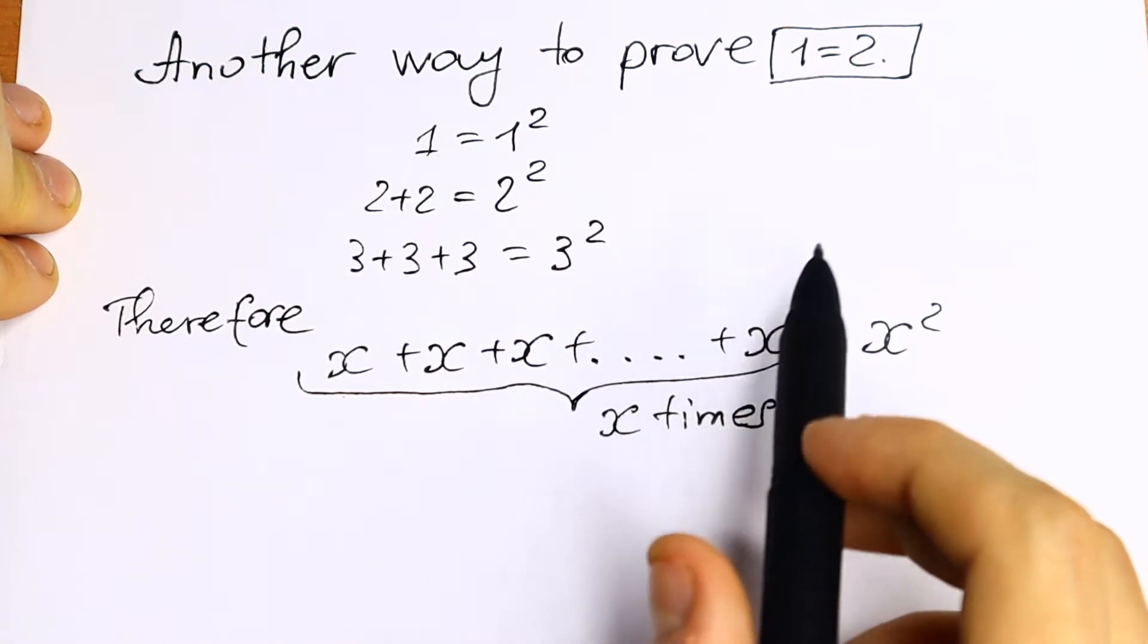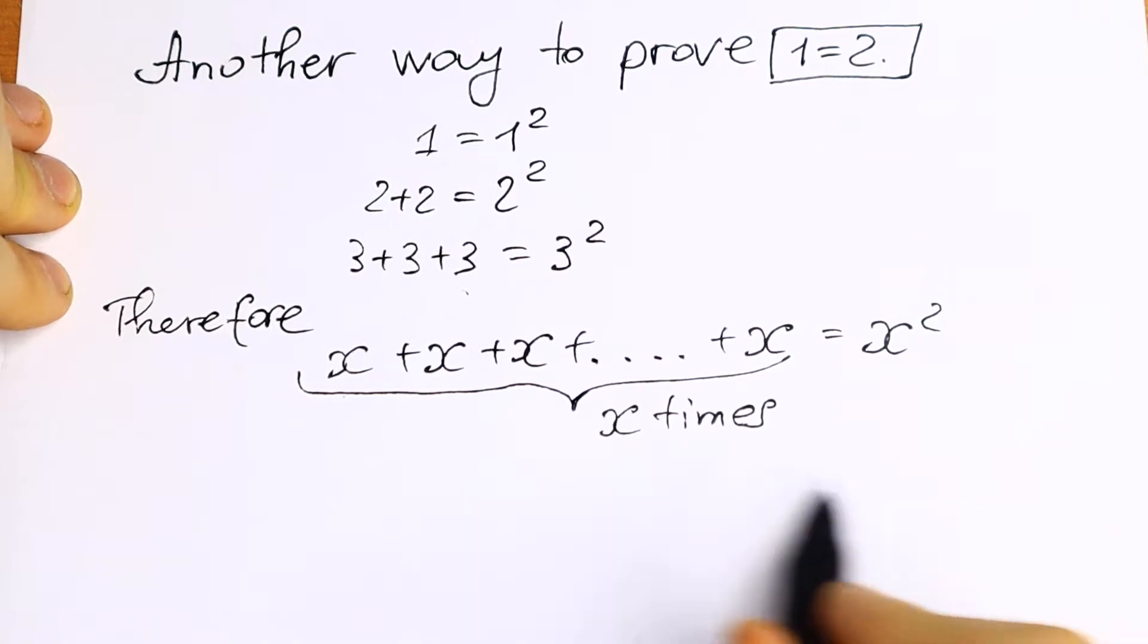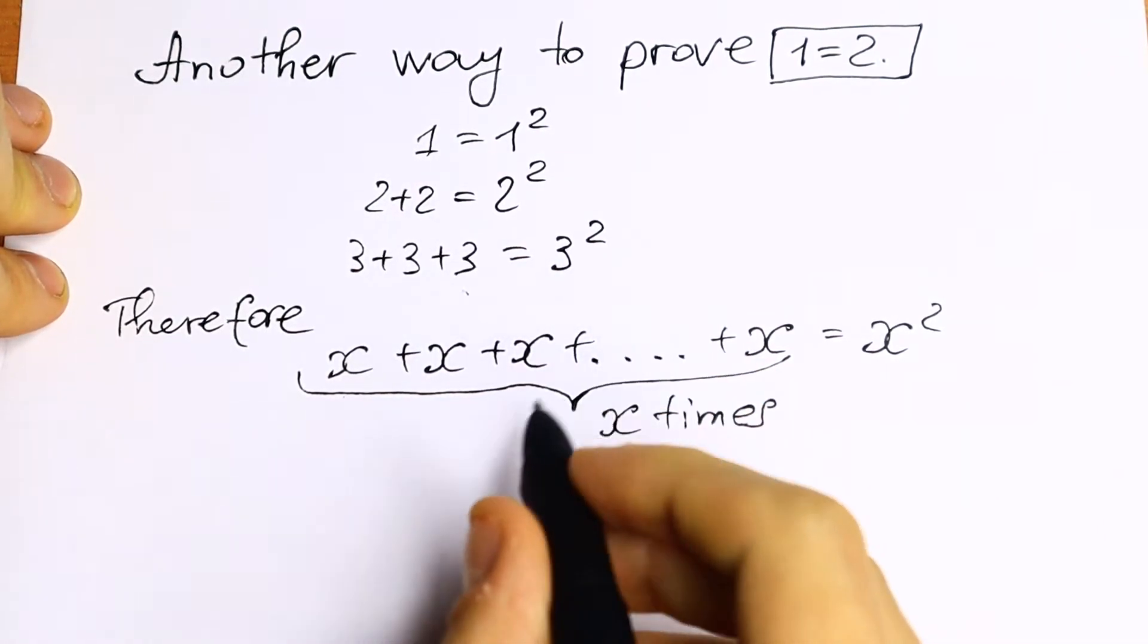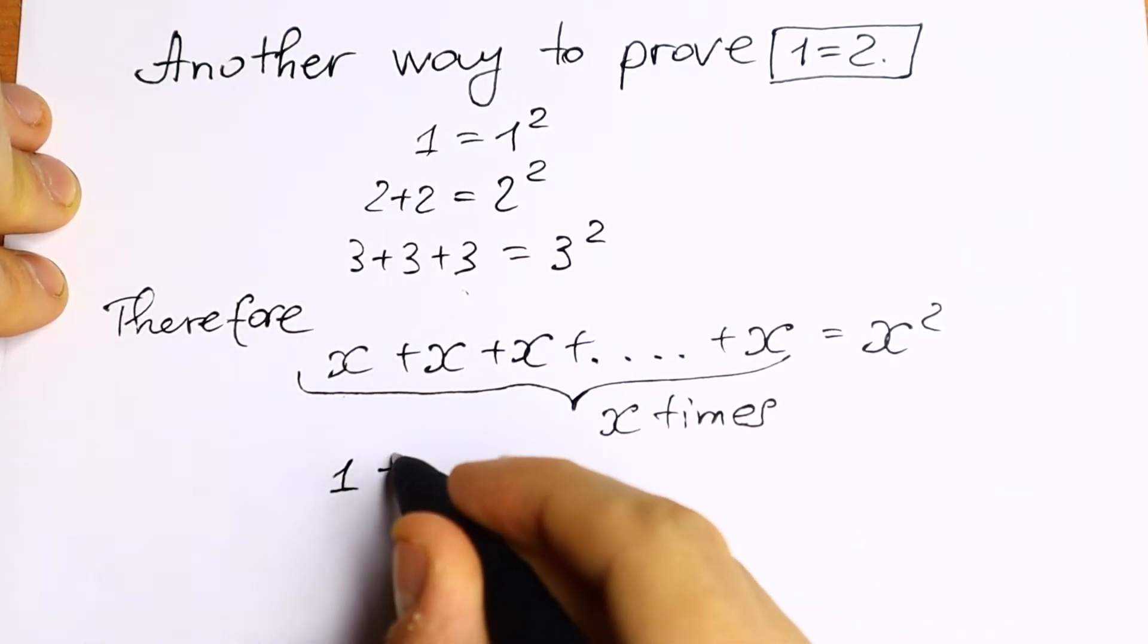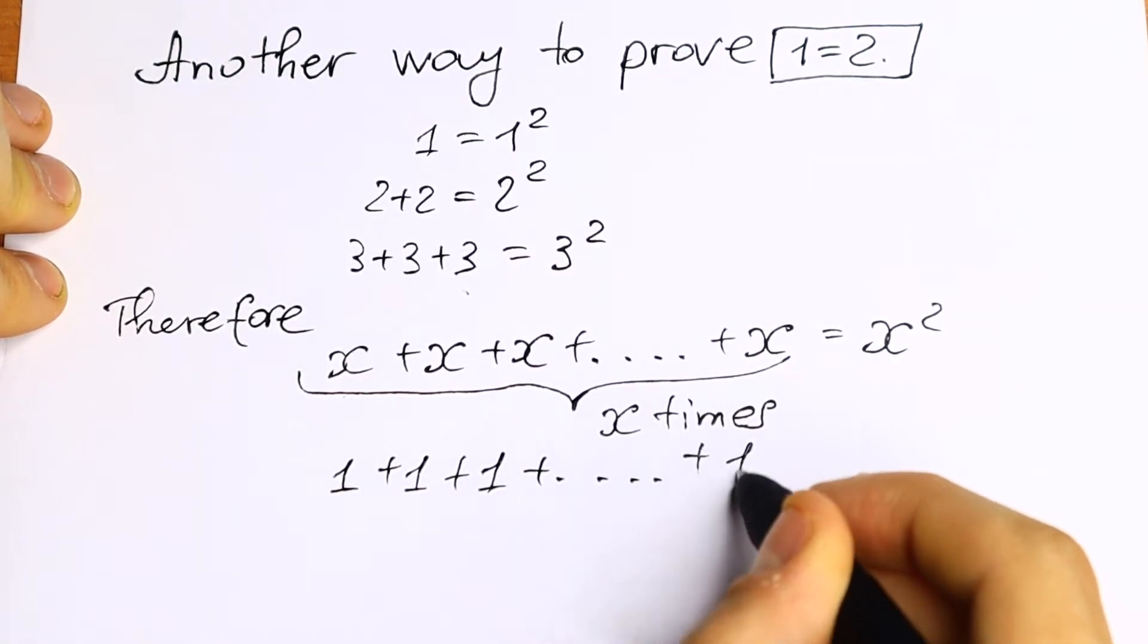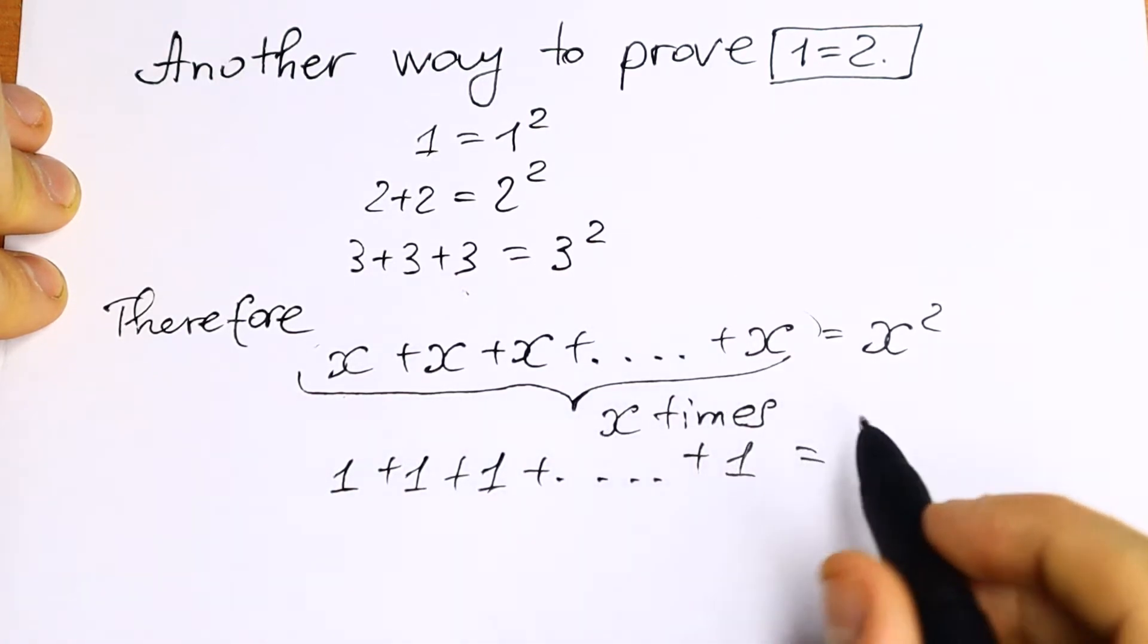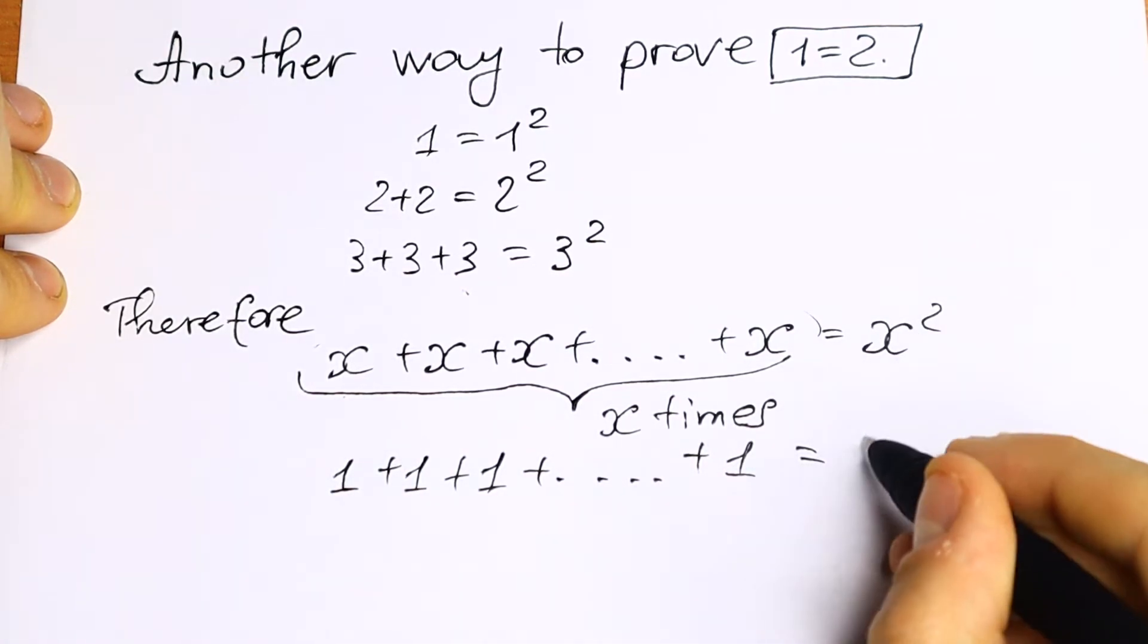So let's take the derivative from the left hand side and right hand side. What we will have? Derivative of x will be 1. So as you can see we'll have 1 plus 1 plus 1 plus dot dot dot and plus 1.